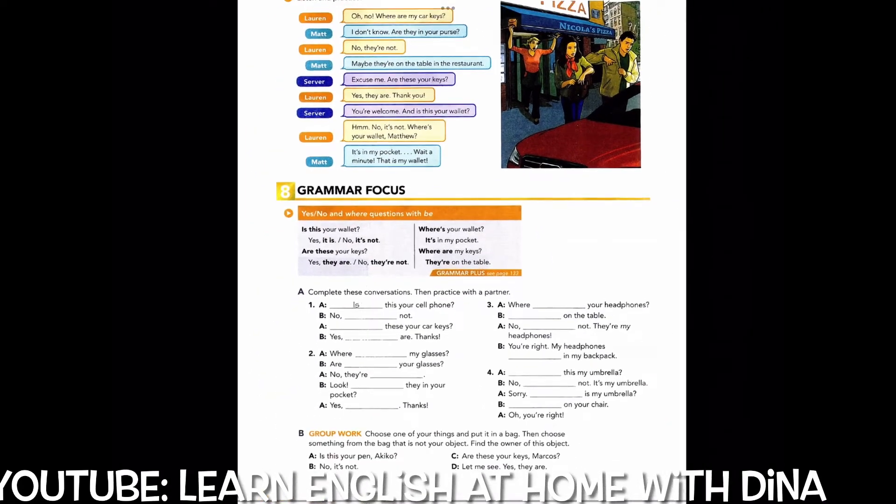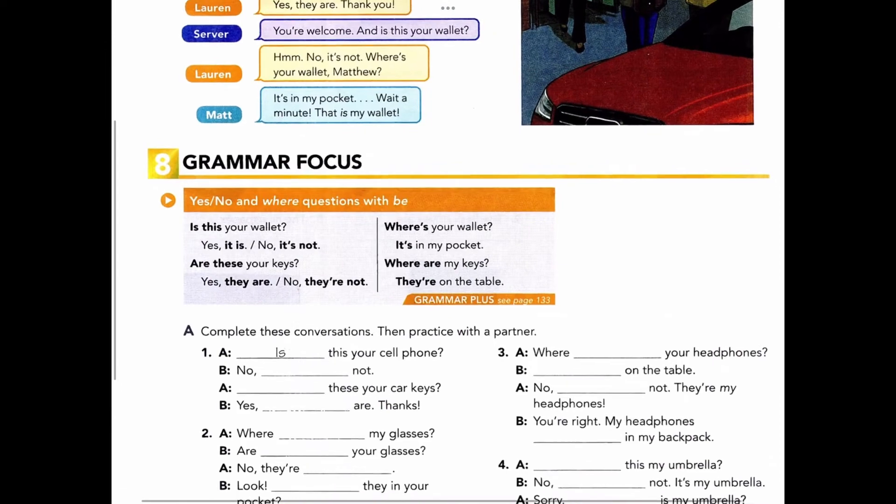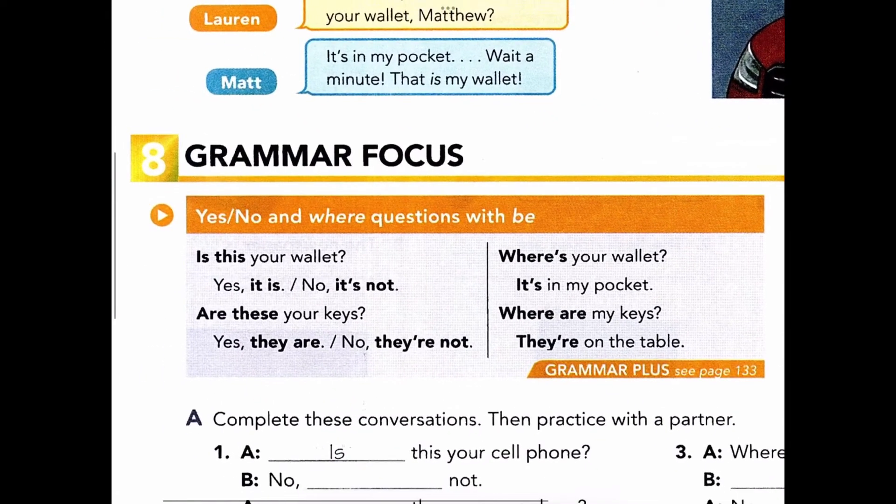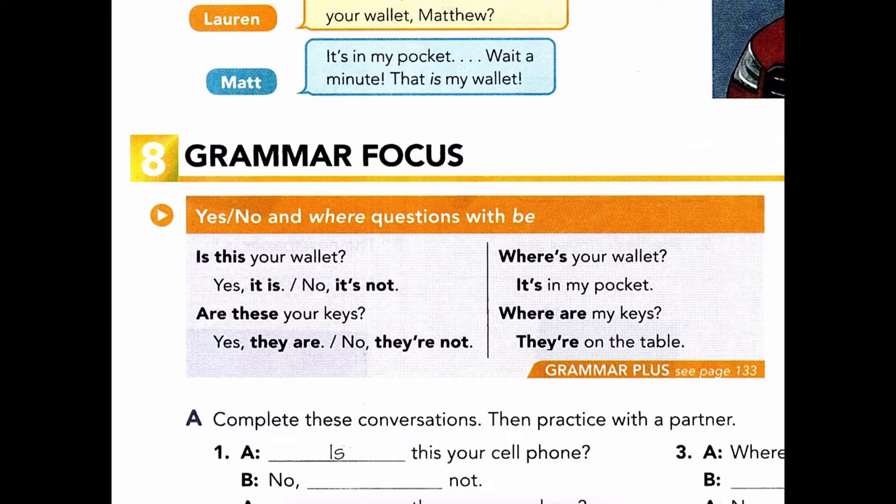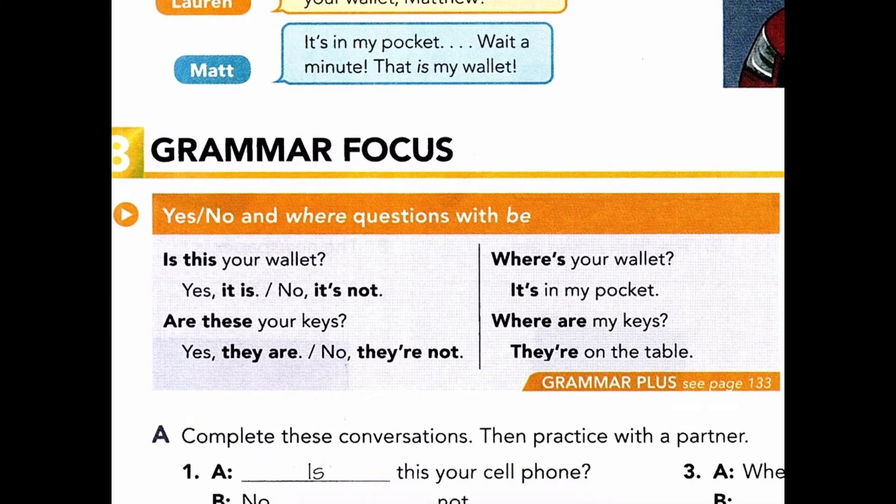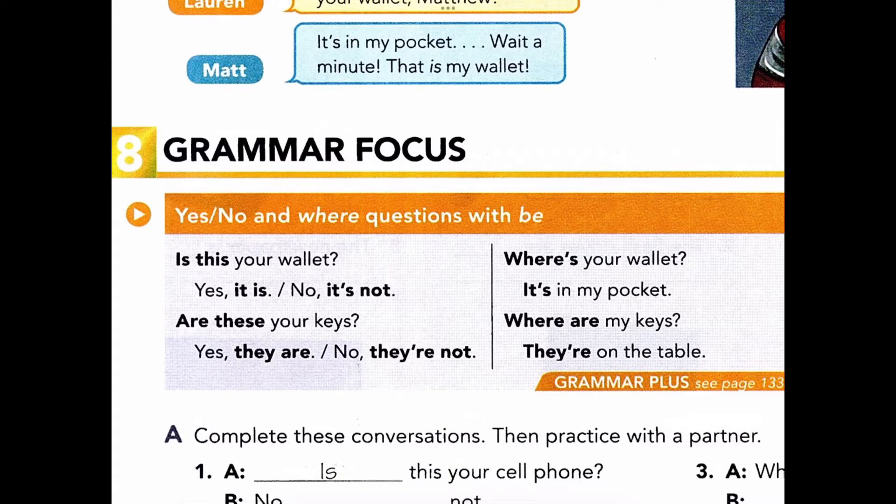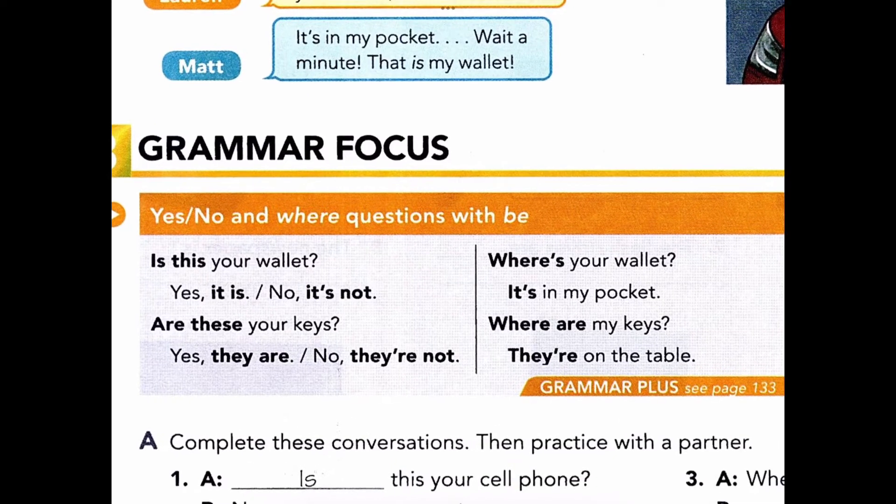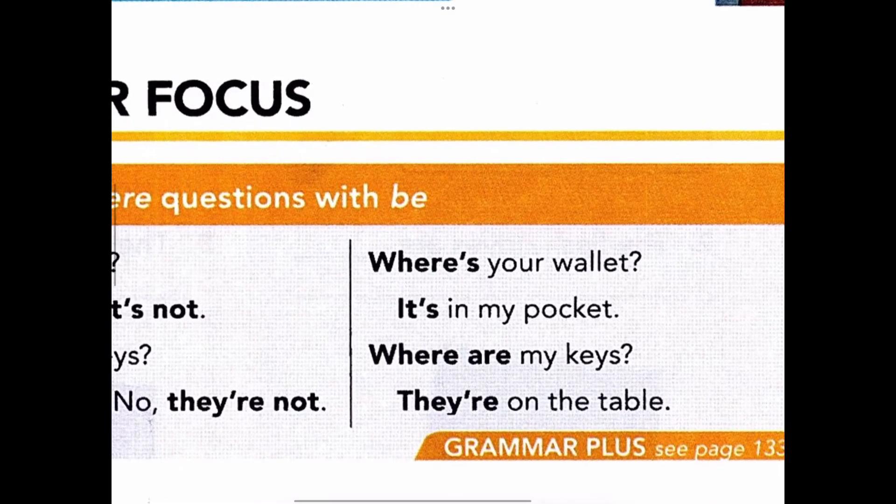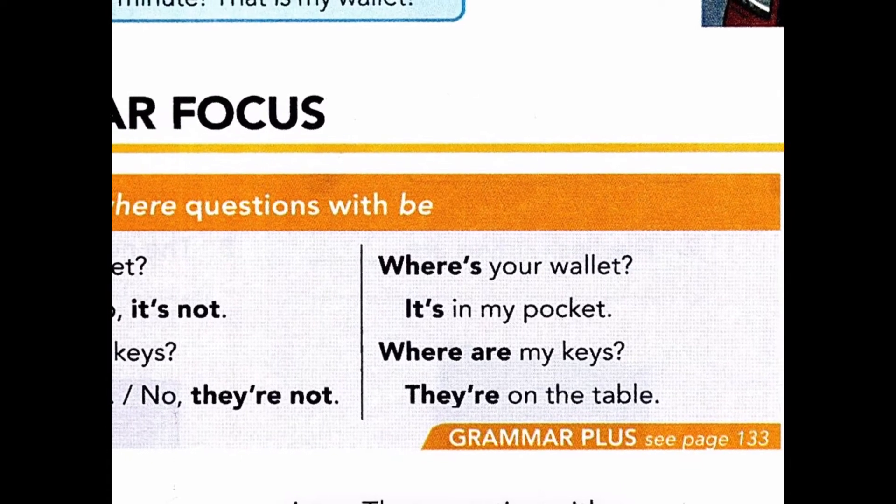Page 11, Exercise 8, Grammar Focus: Yes/No and Where Questions with Be. Is this your wallet? Yes, it is. No, it's not. Are these your keys? Yes, they are. No, they're not. Where's your wallet? It's in my pocket. Where are my keys? They're on the table.